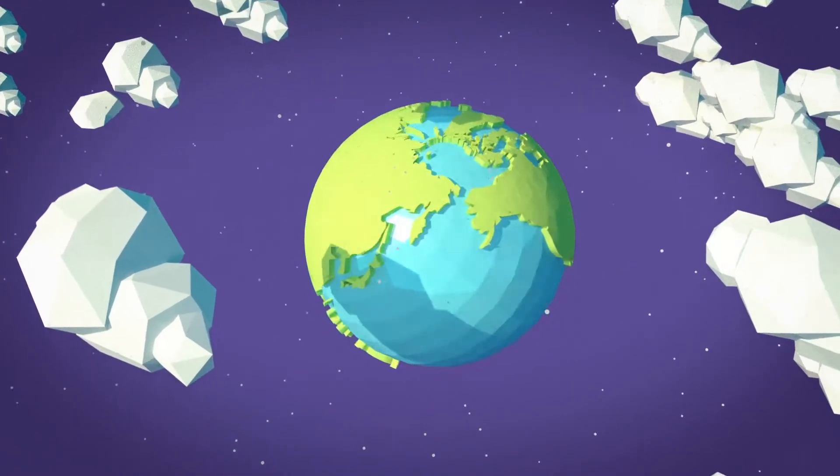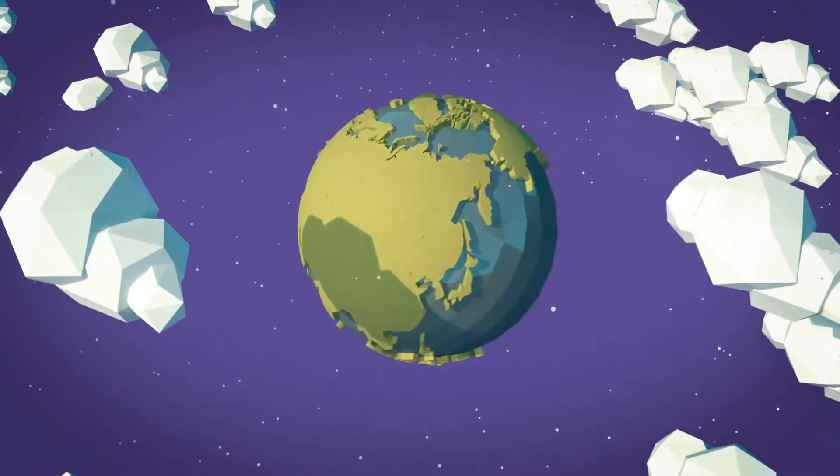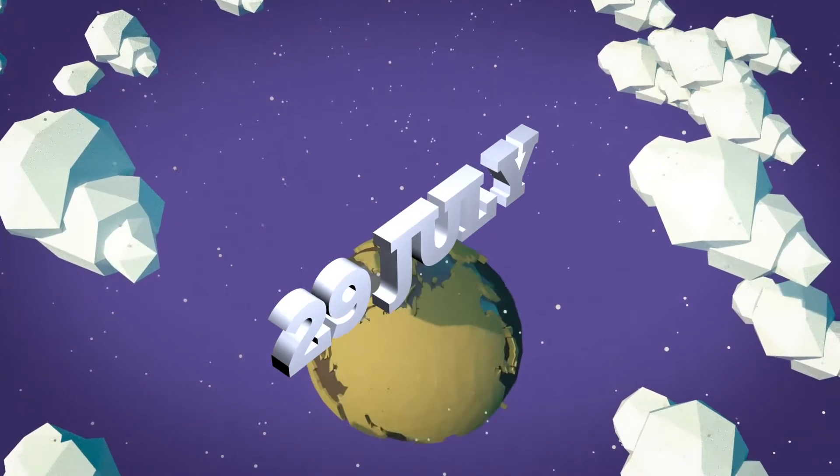Shockingly, Earth Overshoot Day is happening earlier and earlier each year, arriving in 2019 on the 29th of July.